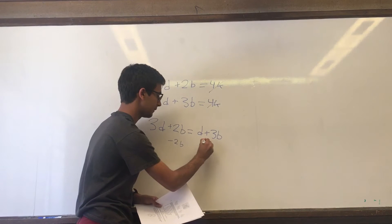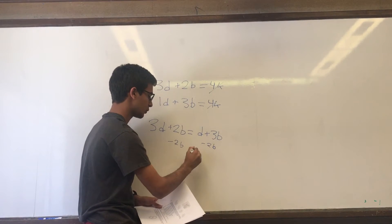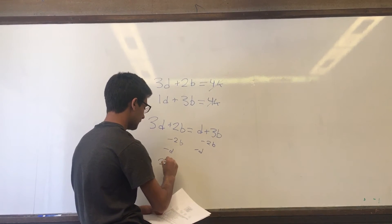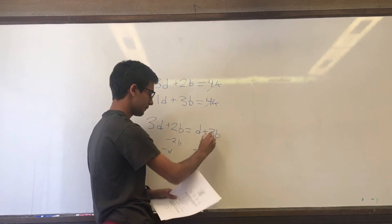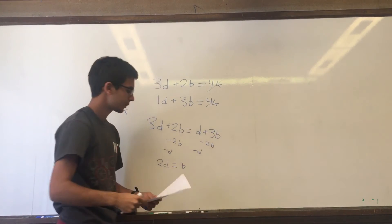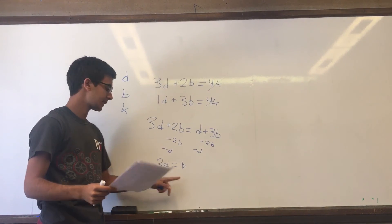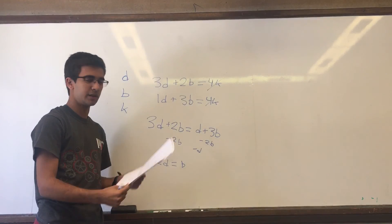And subtract 1d from both sides, we get 2d equals b. So now we know that the price of a bear is twice as expensive as a dog, so option b is correct.